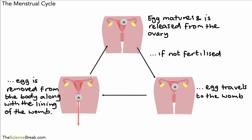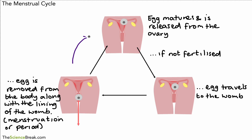The egg is removed from the body along with the lining of the womb, and that as we said is called menstruation, sometimes referred to as the period. This is a cycle and it continues on roughly a 28-day cycle. That's the menstrual cycle.